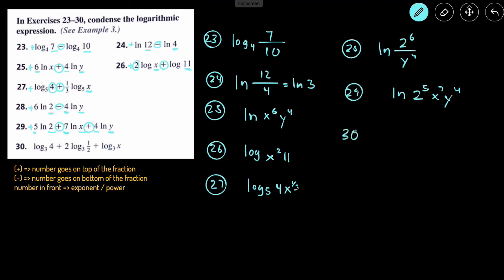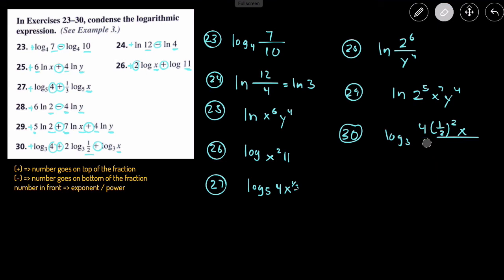Number 30: we write log base 3 and set up a fraction. We have a positive, so 4 goes on top. There's another plus with one half, so that goes on the top; the coefficient 2 in front becomes the power: 2^(1/2). There's another plus, so x goes on top. Since there's nothing on the bottom, we can get rid of the fraction, giving us log base 3 of 4 · 2^(1/2) · x.